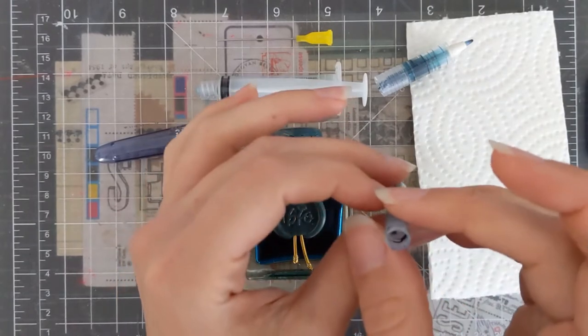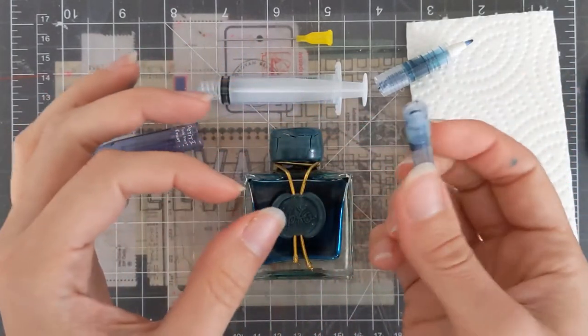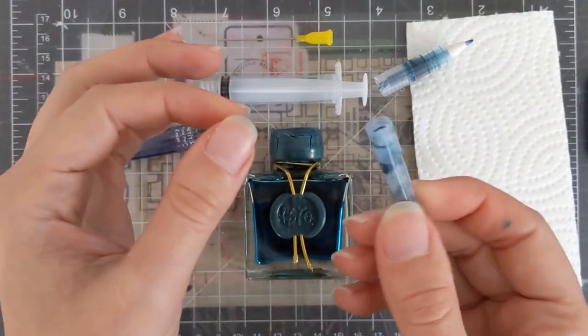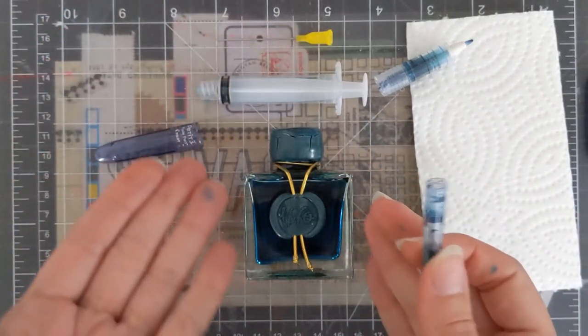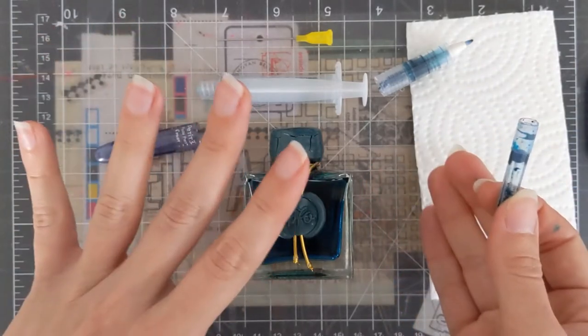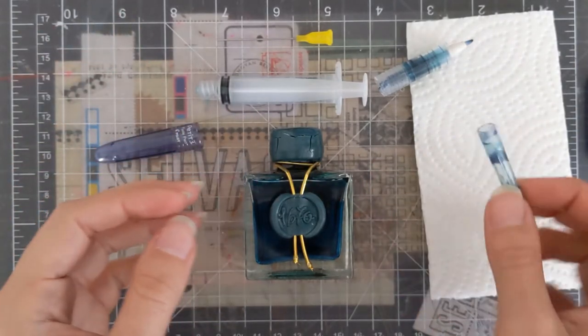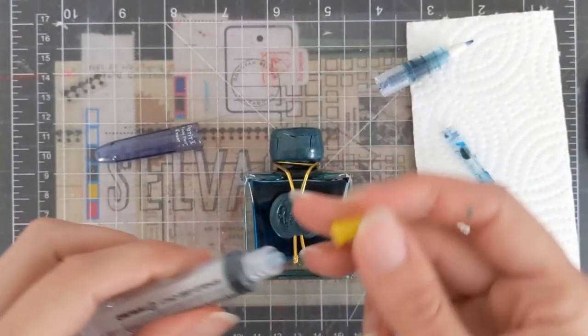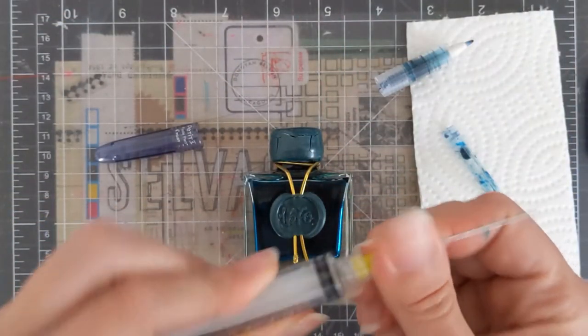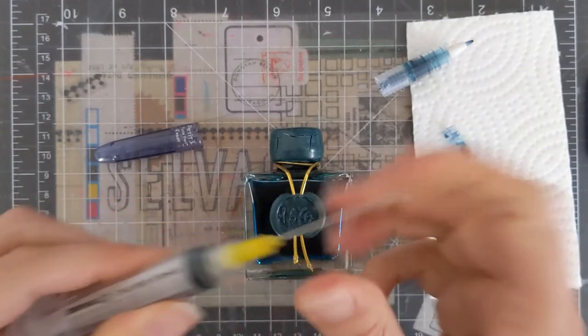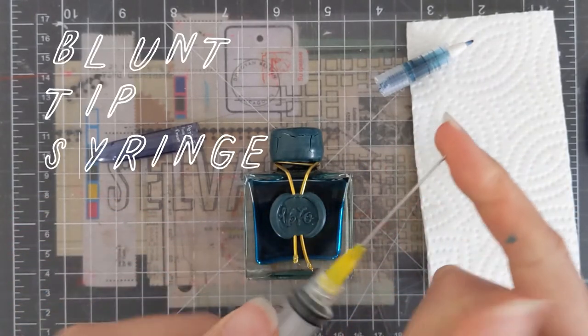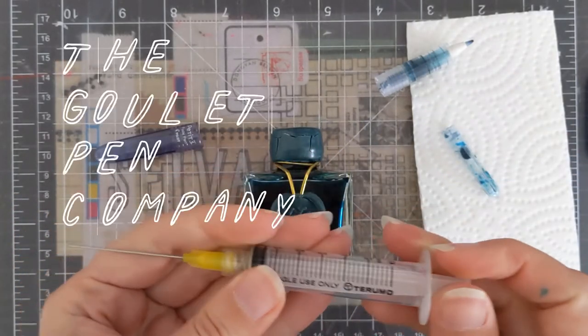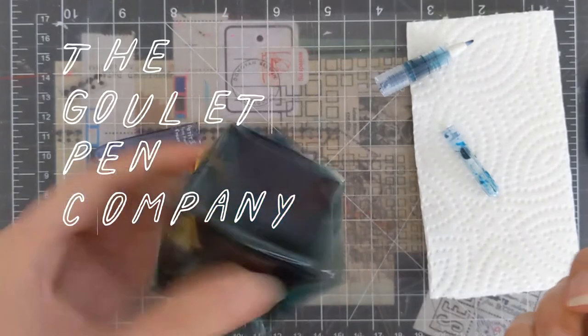So I did buy cartridges initially, but those ran out and those are full of fine ink, but not beautiful ink. So I actually refill my little cartridges with a syringe. And this is a blunt tip syringe. I believe I got these from Goulet Pens.